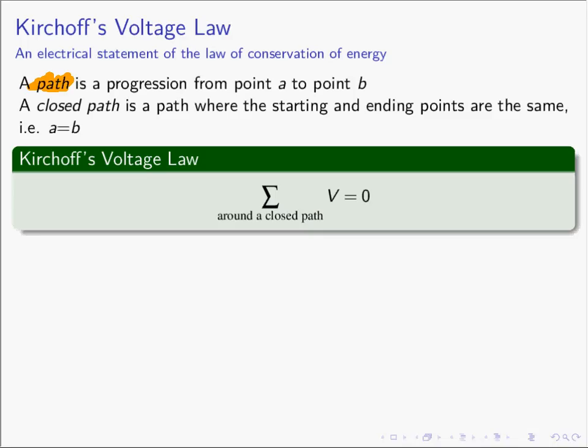Typically if you go hiking, you'll drive your car to the trailhead, you'll park, you'll go for a hike through the woods and through the streams and up and over the hills, and then eventually you will come back to where you started from. That is, you hiked a closed path — the starting and ending points are the same. You hiked back to where you started from because you want to get to your car parked at the trailhead.